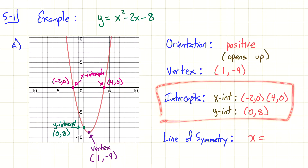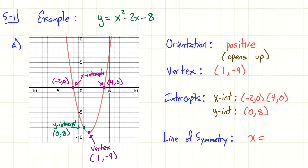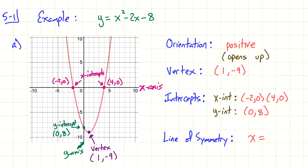Now, intercepts — there are two different types: X-intercepts and Y-intercepts. X-intercepts occur on the X-axis. So looking at where the graph crosses the X-axis, we have two X-intercepts. The coordinates are negative 2, 0 and 4, 0. Remember, coordinates are always X, Y — the first number tells you where you are on the X-axis, and 0 means it's staying right on that axis.